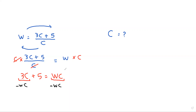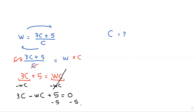Cancel the wc terms. We get 3c minus wc plus 5 equals 0. To move the 5, subtract 5 from both sides. Cancelling gives us 3c minus wc equals negative 5.